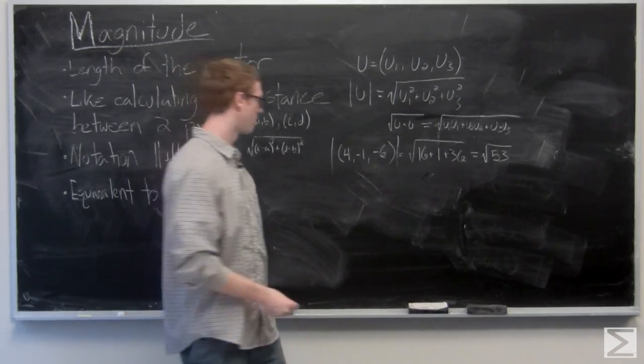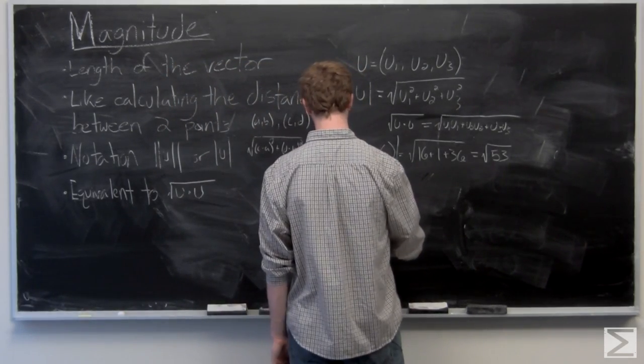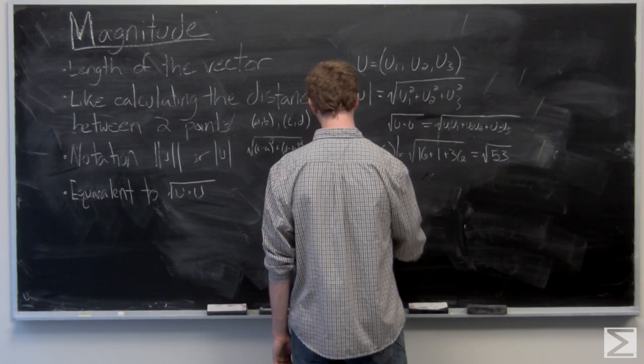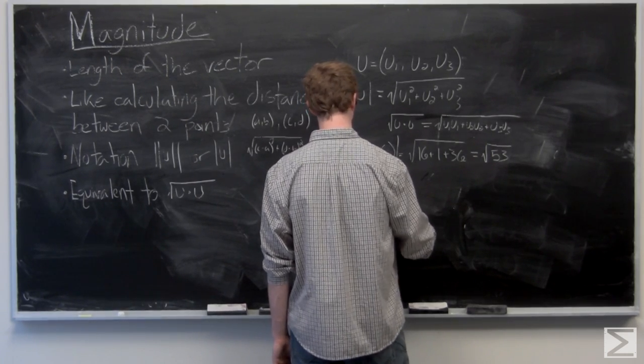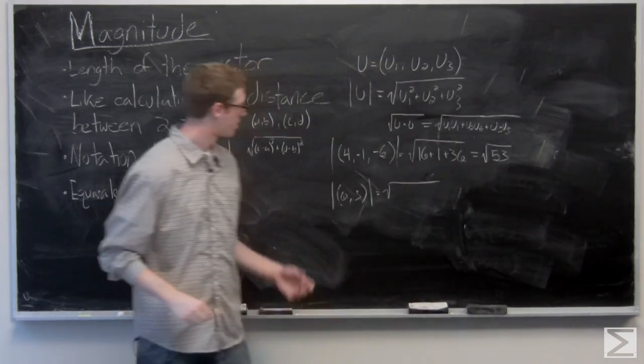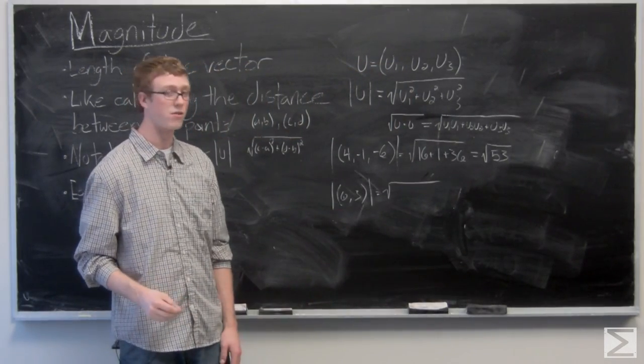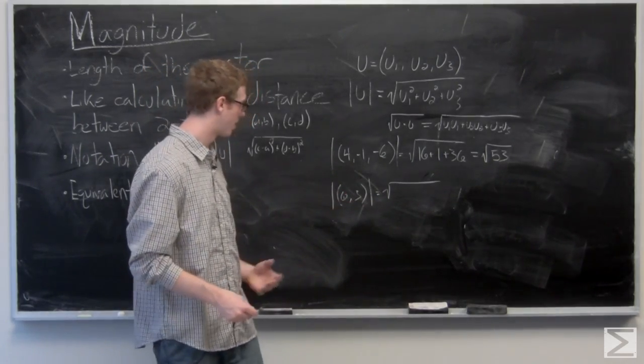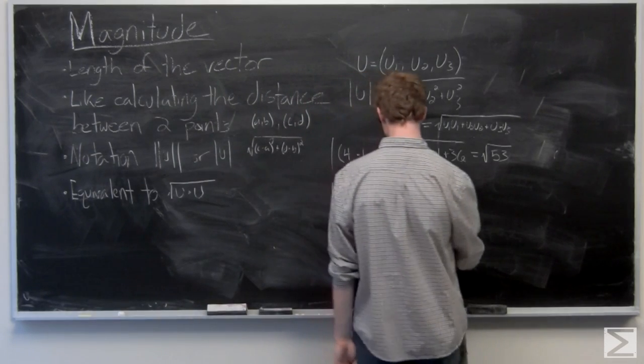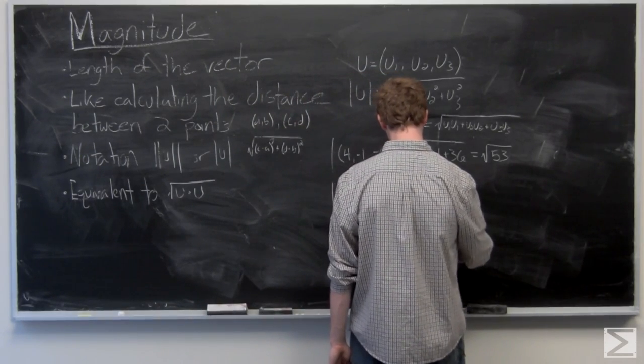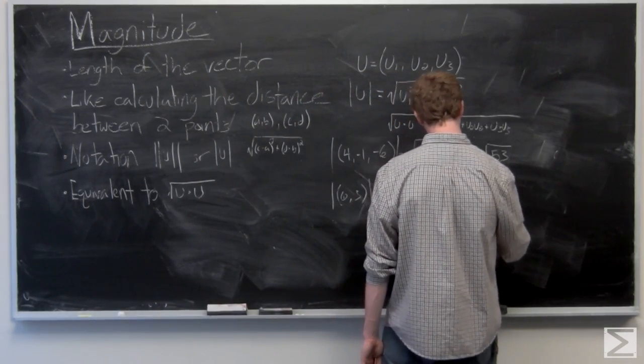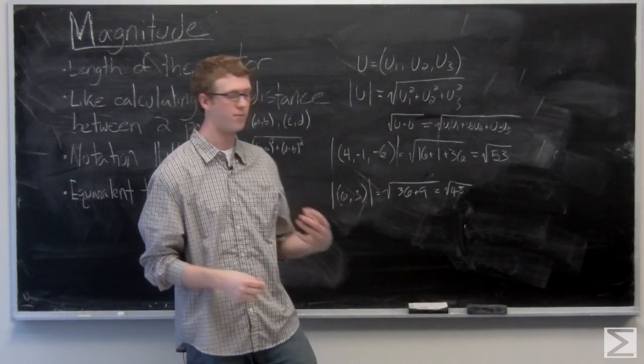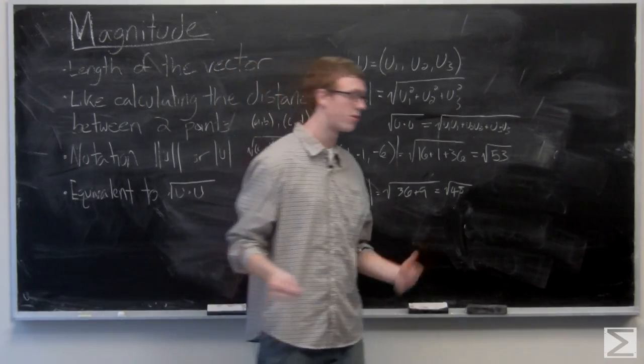We'll take a look at a vector in 2 space as well. So the magnitude of that vector is 6, 3. 6 squared plus 3 squared is going to be 36 plus 9, which is the square root of 45, which can be simplified to 3 square roots of 5.